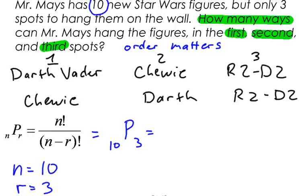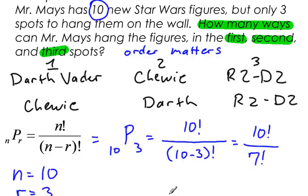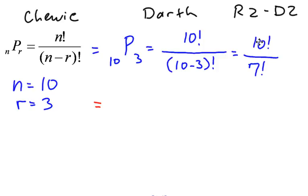N is ten. So this would be ten factorial. And then on the bottom, I would have N minus R, which is ten minus three factorial. And this would be equal to ten factorial divided by seven factorial. Now, if you've watched one of the other videos on factorials, you should know that a factorial, like ten factorial, is ten times nine times eight times seven times six times five times four times three times two times one.